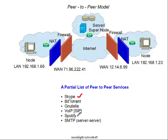Spotify is a music streaming service, and that is also peer-to-peer. Finally, SMTP, the mail transfer protocol — while it is a client-server protocol from the host machine up to the mail server — between mail servers it acts as peer-to-peer. It is in a public network, not a private network, so it does not have the same NAT and firewall issues mentioned earlier.